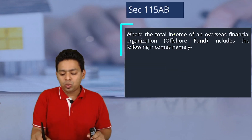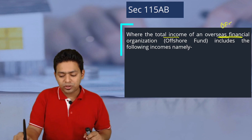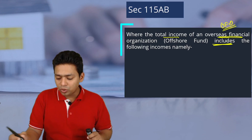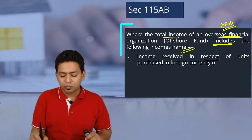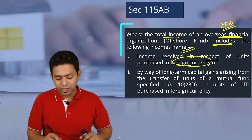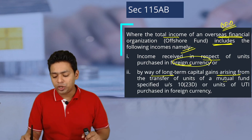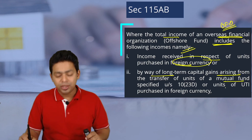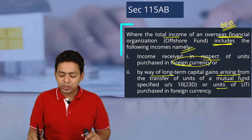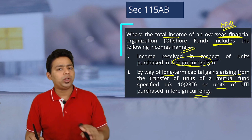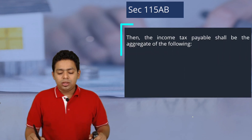Under this provision, where the total income of an Overseas Financial Organization (OFO) includes the following incomes — income received in respect of units purchased in foreign currency in India, or by way of long-term capital gain arising on transfer of units of a mutual fund specified under Section 10(23D) or units of UTI purchased in foreign currency — then special tax treatment applies.